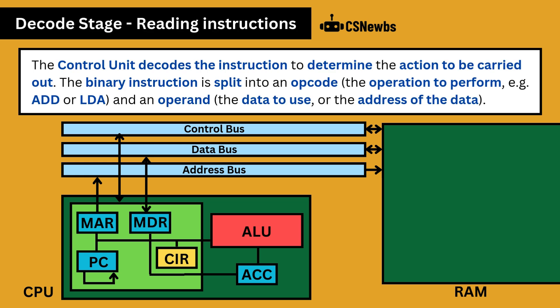The control unit decodes the instruction to determine the action to be carried out. The binary instruction is split into an opcode, which is the operation to perform, such as add or load, and an operand, which is the data to use or the address of the data.